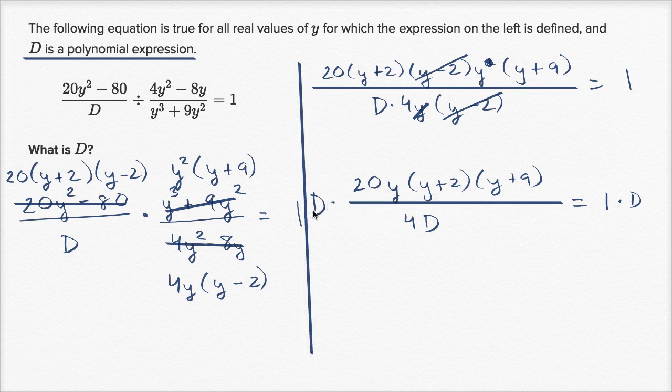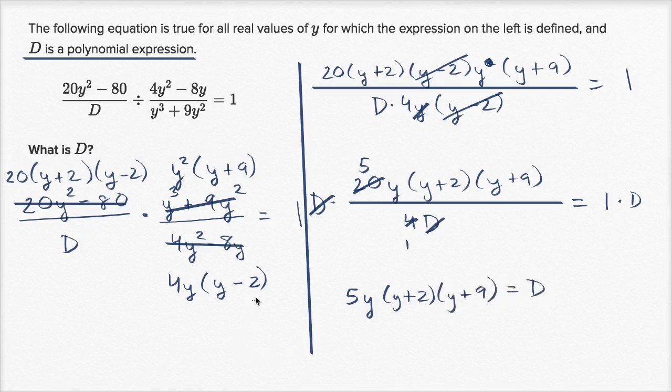So d times this, those cancel out, and we're going to be left with 20y times, actually let me, I can simplify it even more. 20 divided by 4 is 5. So the numerator is now just 1. So we have 5 times y, times y plus 2, times y plus 9, is equal to d. And we're done.